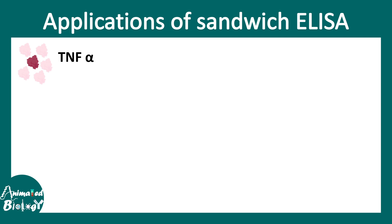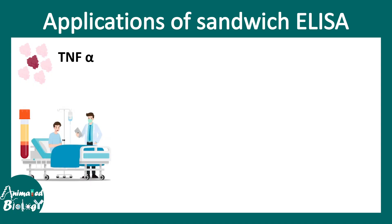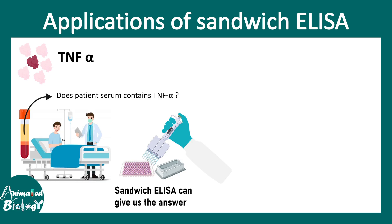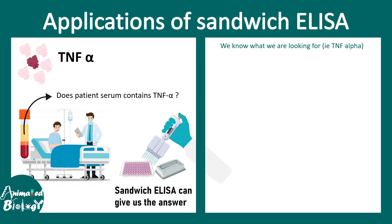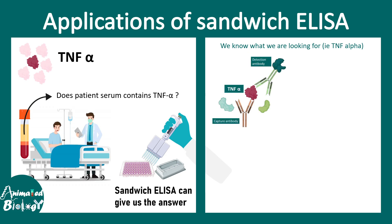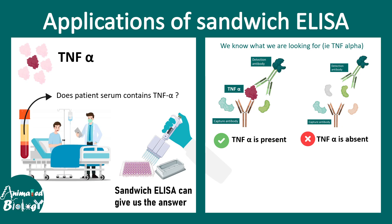As a specific example, consider an inflammatory disease where TNF-alpha, a potential inflammatory mediator, is increased in patient blood. The question is whether TNF-alpha is present in the patient serum and, if so, how much. The starting material is patient serum. There are two scenarios: TNF-alpha is present and detected, or TNF-alpha is absent and there is no color reaction.